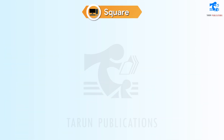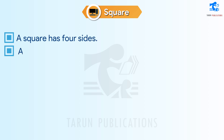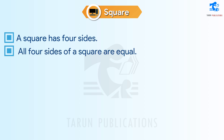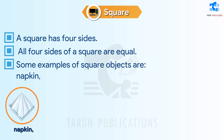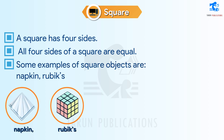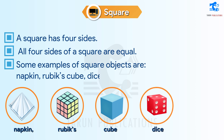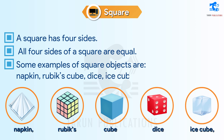Square. A square has four sides. All four sides of a square are equal. Some examples of square objects are napkin, Rubik's cube, dice, ice cube, etc.